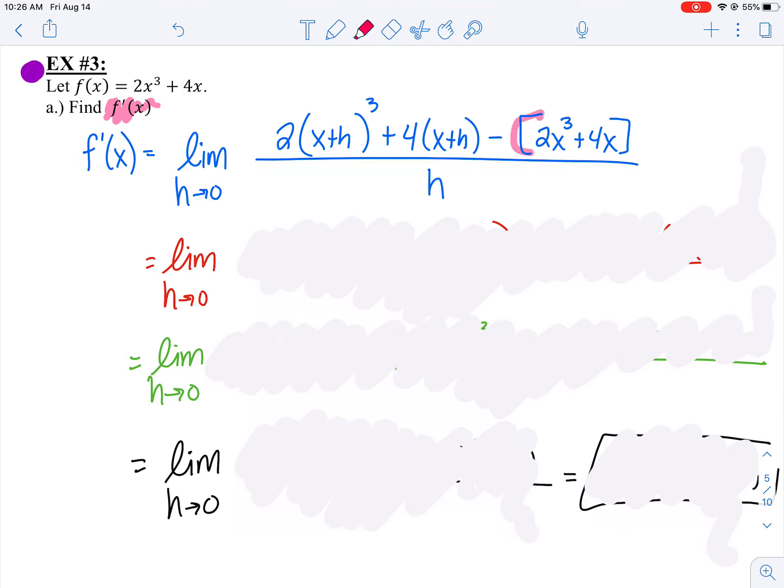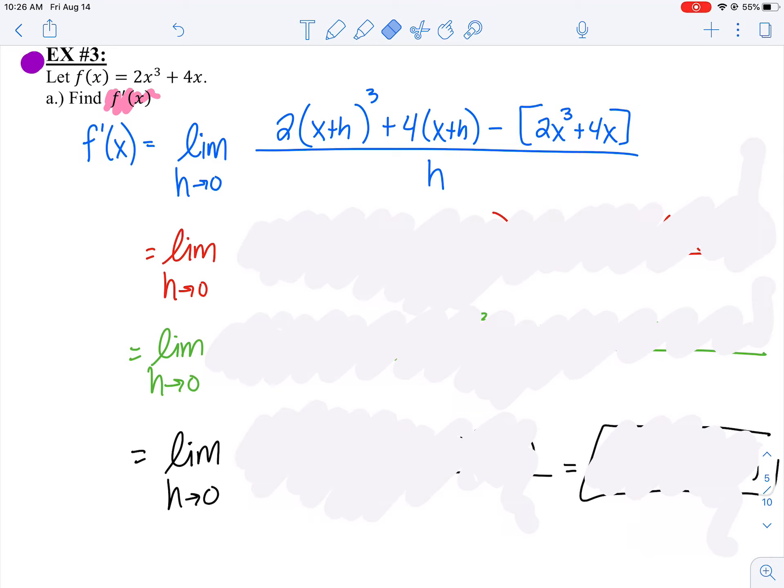Notice I put this part in parentheses because it's important to distribute the negative to each term. That's a common mistake students make, and it messes up everything after that. These problems take many steps, and if you mess up on any step, it ruins everything from then on. You've got to be very careful.